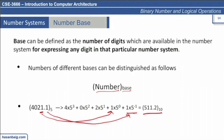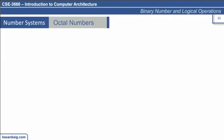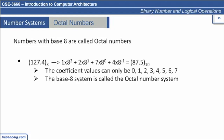Similarly, we have octal numbers, which is base 8. Numbers with base 8 are called octal numbers. How many possible coefficient values can be used to represent a digit? From 0 to 7. The coefficient values can only be from 0 to 7, and this is called the octal number system. The same procedure applies: multiply by the rising power of the base — 8 to the power 1, 8 to the power 2, and 8 to the power minus 1 for the fractional part.